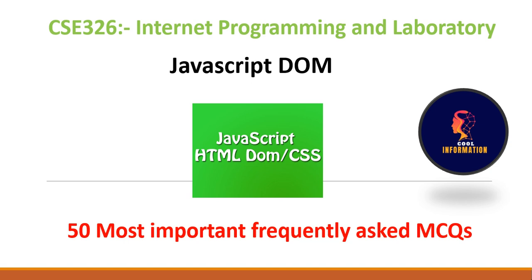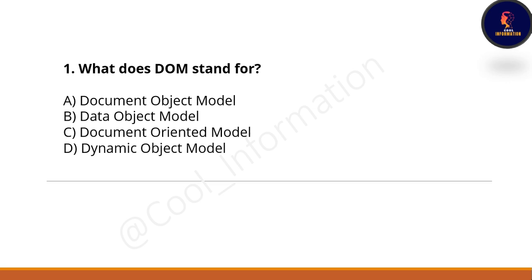Without wasting any time, let's proceed with the first question: What does DOM stand for? Option A: Document Object Model. Option B: Data Object Model. Option C: Document Oriented Model. Option D: Dynamic Object Model. The correct option is A — the full form of DOM is Document Object Model.